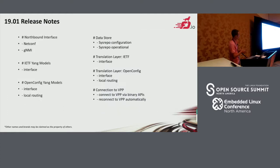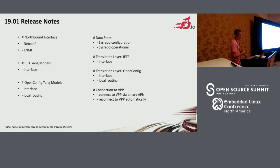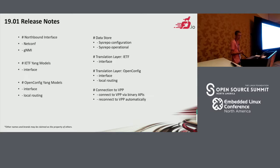This is the first release notes. In the first release, we supported two northbound interfaces — netconf and gNMI — and we also supported one IETF YANG model (interface) and two OpenConfig YANG models (interface and local routing). We also supported the sysrepo configuration data store and operational data store, and configured the connection to VPP.